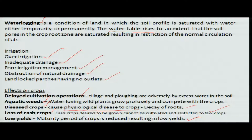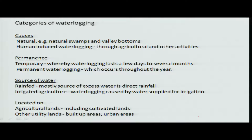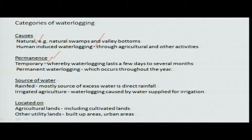Having seen the causes and effects of water logging, the causes can be natural, human-induced, or permanent. During rainfall days, water accumulations take place, and immediately after rainfall this type of water logging moves away — that is what we call temporary water logging. Permanent water logging exists along coastal areas as marshy land. Sources causing this can be rain-fed direct rainfall with poor drainage, or excess irrigation.